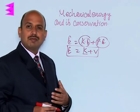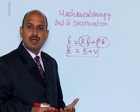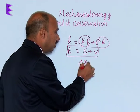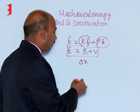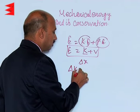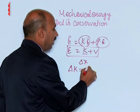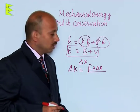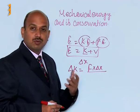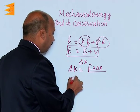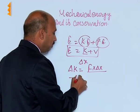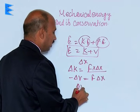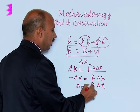Suppose a force F is applied and the body is displaced by a distance delta x. Then, according to the work-energy theorem, we can write: change in kinetic energy is equal to F into delta x, that is the change in displacement. As the forces are conservative, we can also write: minus of change in potential energy is equal to F into delta x, that is delta V equals negative F into delta x.